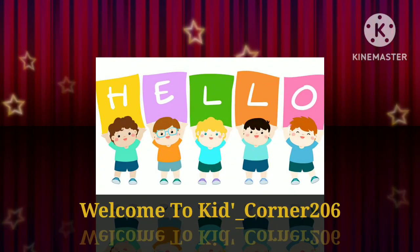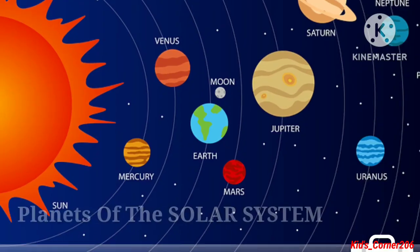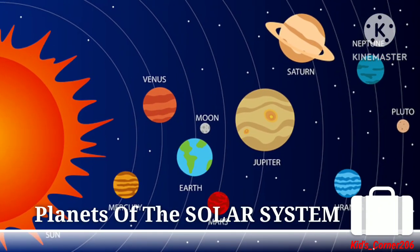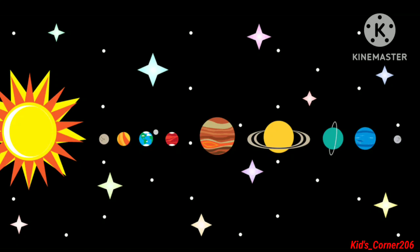Hello Bacho, welcome to Kids Corner. In this video we are going to study about planets of the solar system. Eight planets in their increasing order of distance from the sun are: